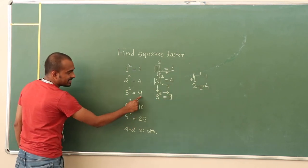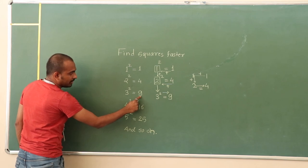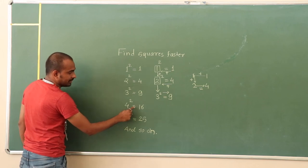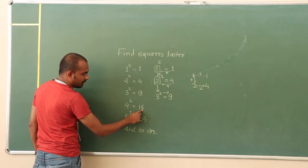Similarly, we can find. Let's see the next numbers now. 9 plus 3 is 12, and 12 plus 4 is 16. So it is square of 4, which is 16.